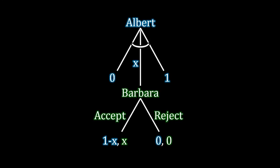Going back to the ultimatum game — we've seen this before. Albert makes a take-it-or-leave-it offer X to Barbara, which Barbara accepts or rejects. If she accepts, then she receives a value of X and Albert receives the remainder. And if she rejects, then both parties receive zero.